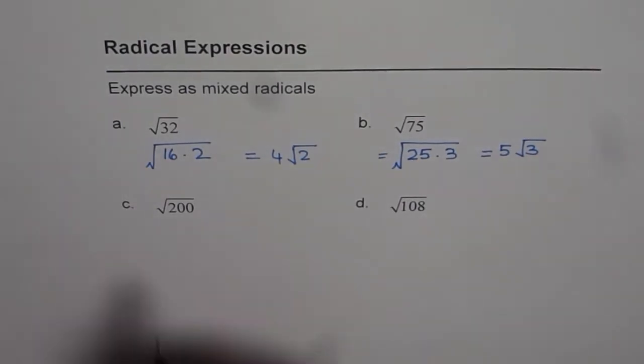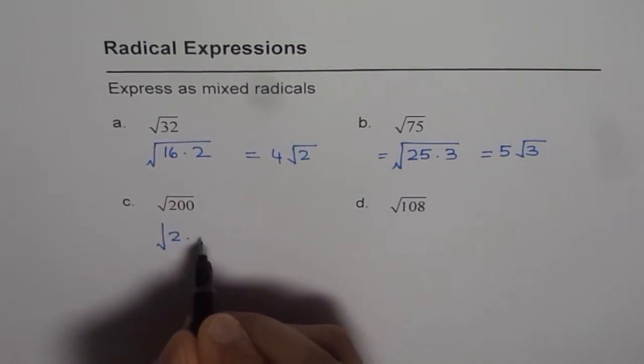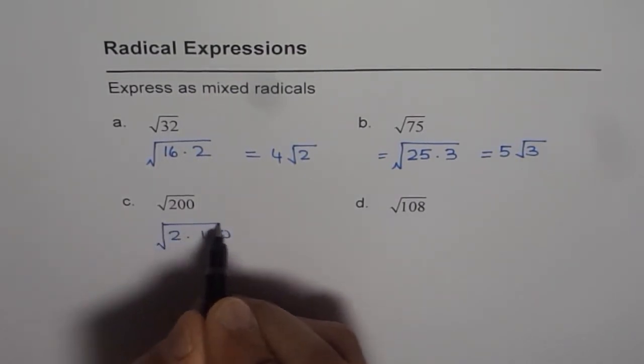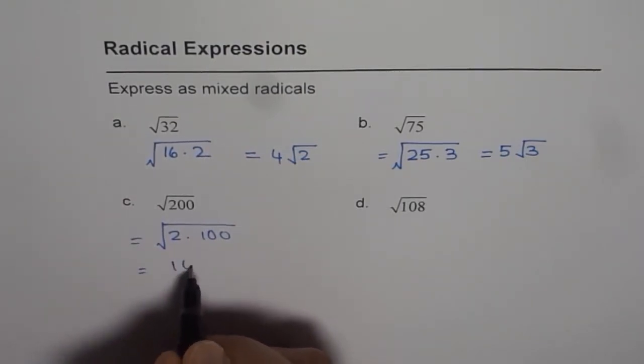Now let us look into square root of 200. 200 can be written as 2 times 100. 100 is a perfect square. We could write this as 10 square.